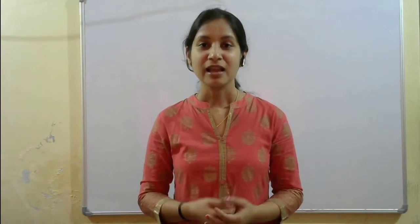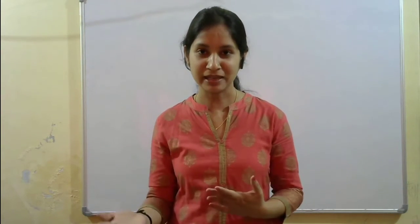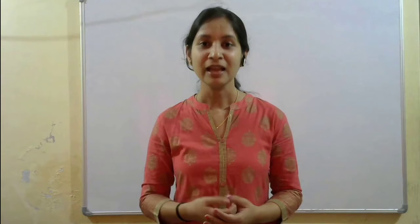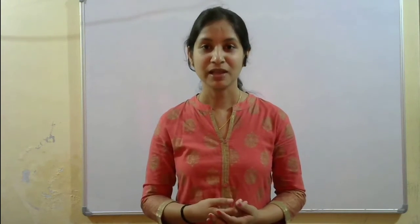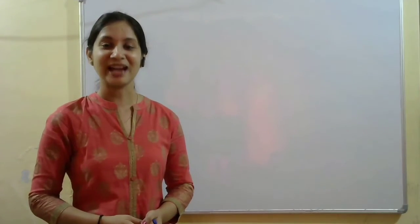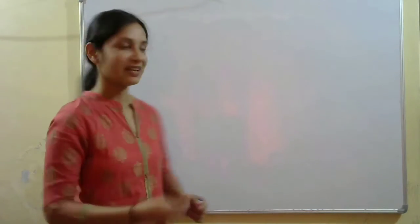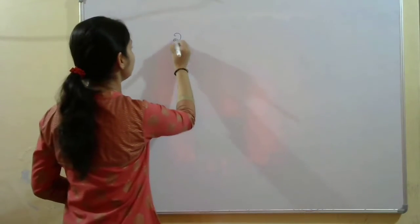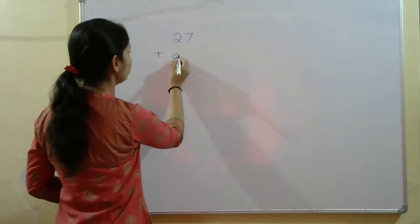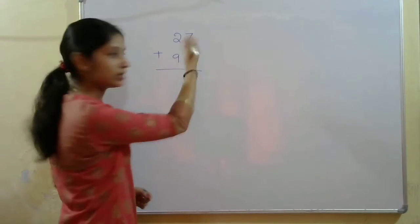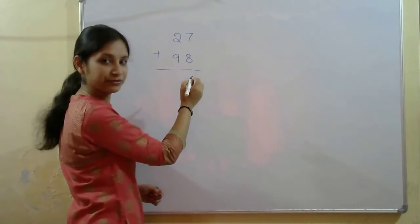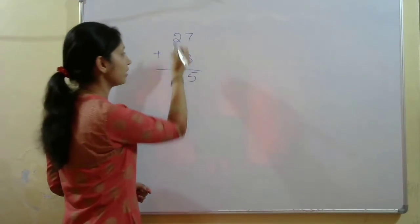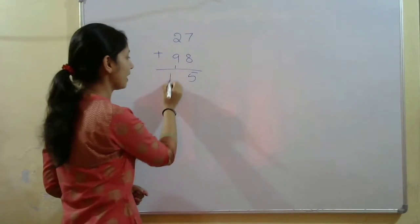In our first session, we are dealing with some basic operations in mathematics using Vedic tricks. Let us go for addition first, and we are solving problems based on two-digit numbers. Let us go for addition of 27 and 98. First, using the conventional method: we write 27 plus 98 vertically and add 7 plus 8, which gives us 15. We write 5, carry over 1, and this gives us 12.